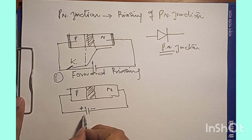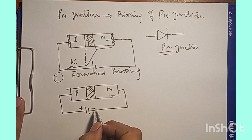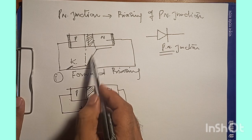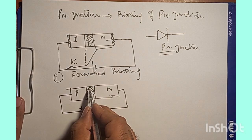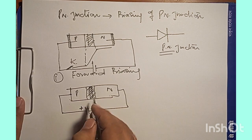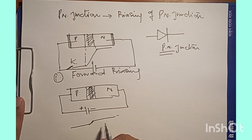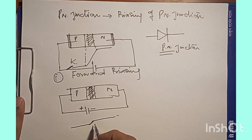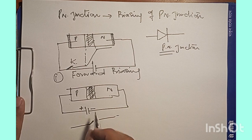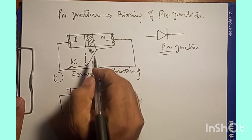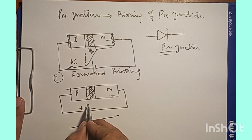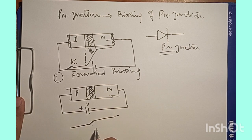The potential difference we apply once we connect the battery reduces the potential barrier — it will reduce the height of the barrier, giving us a small potential barrier with a smaller slope. The potential difference reduces the barrier potential. If the barrier potential is VB and the applied potential is V, then the resultant barrier potential will be VB minus V.